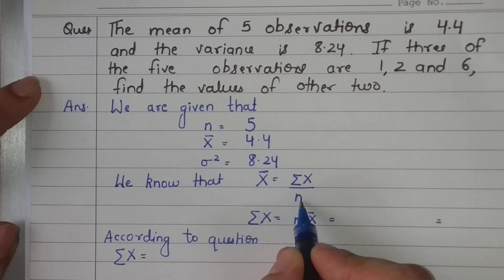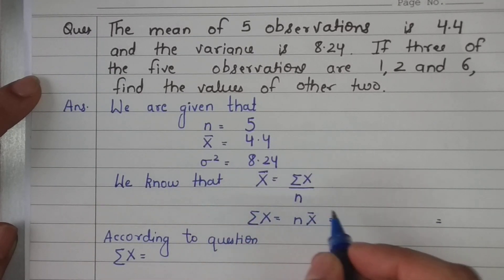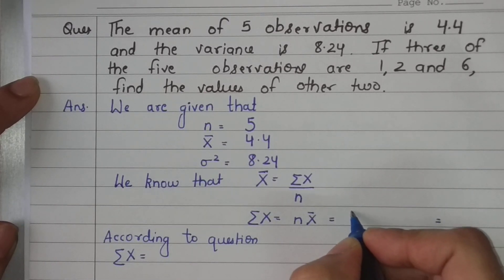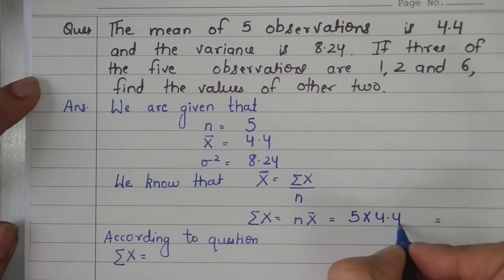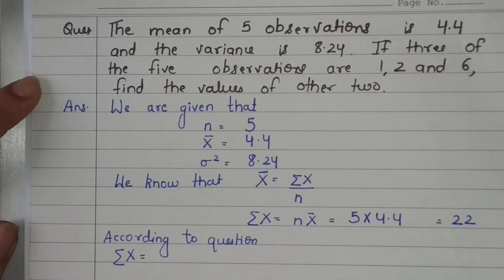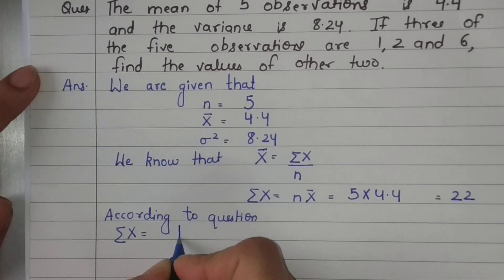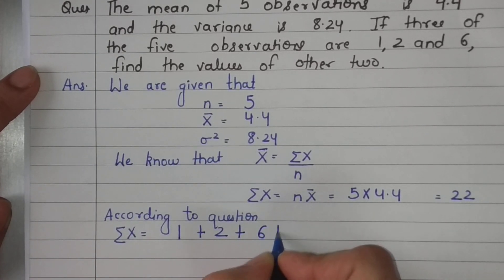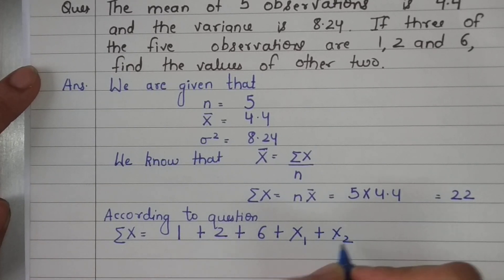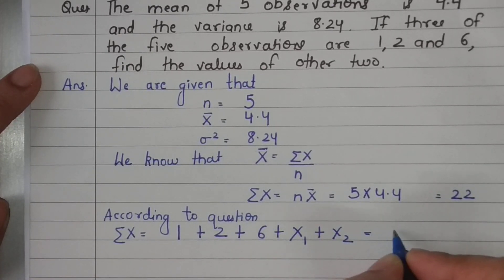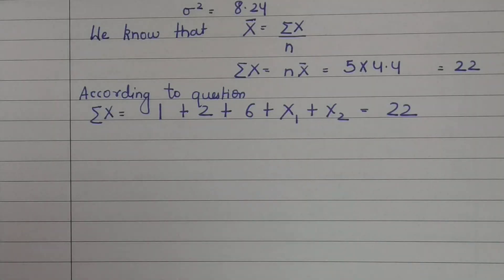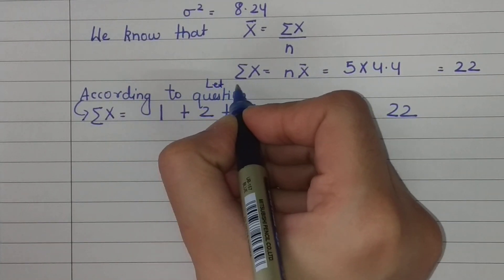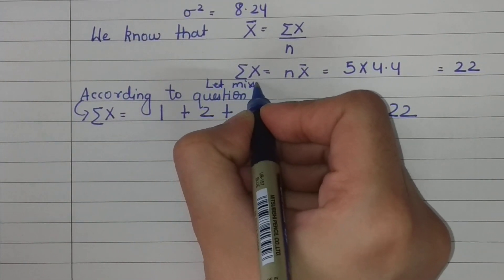Since sigma x = nx̄ = 22, and the known observations are 1, 2, and 6, we have: 1 + 2 + 6 + x₁ + x₂ = 22, so x₁ + x₂ = 13. Let the missing observations be x₁ and x₂. We call this Equation 1.